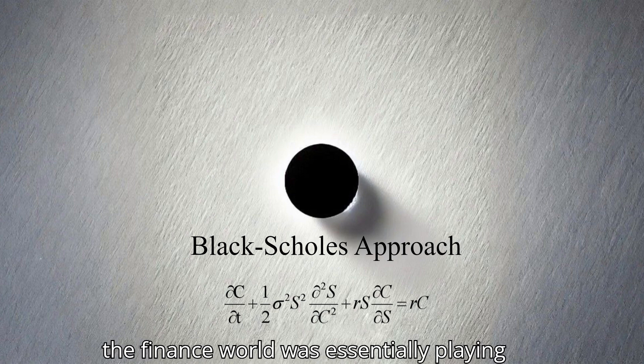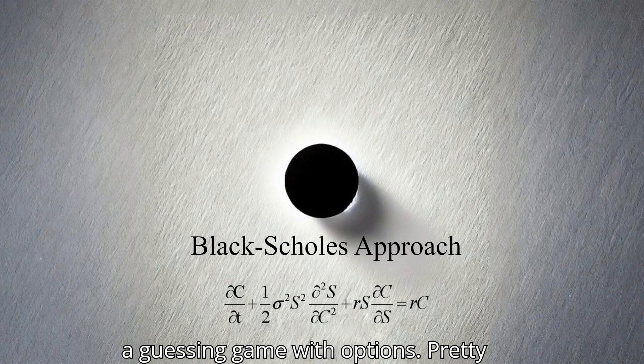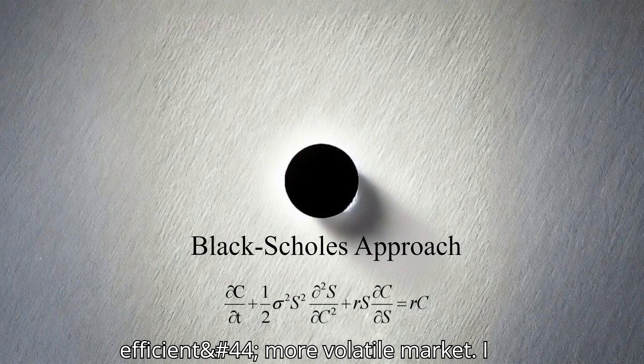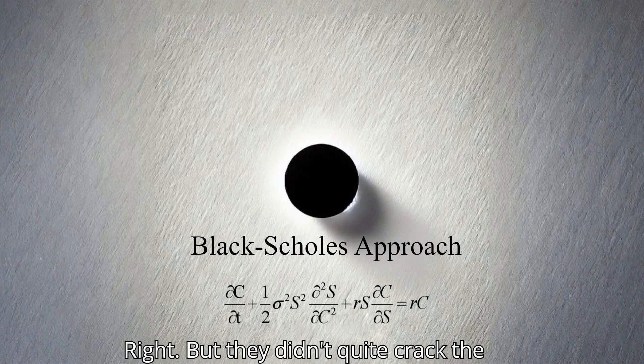Before Black-Scholes, the finance world was essentially playing a guessing game with options. It was certainly a less efficient, more volatile market. There were attempts to develop models, like Samuelson's work, but they didn't quite crack the code.